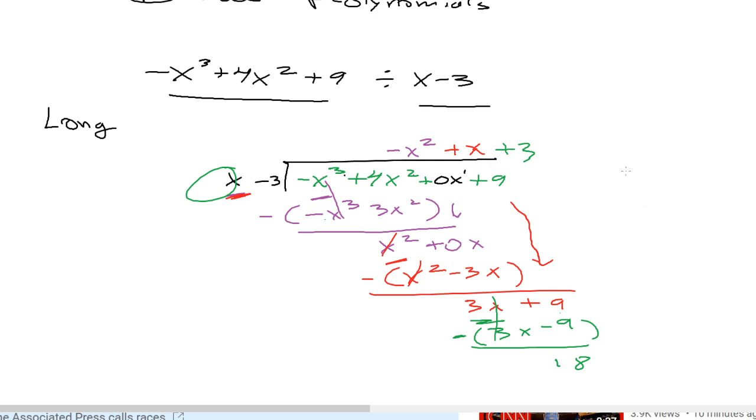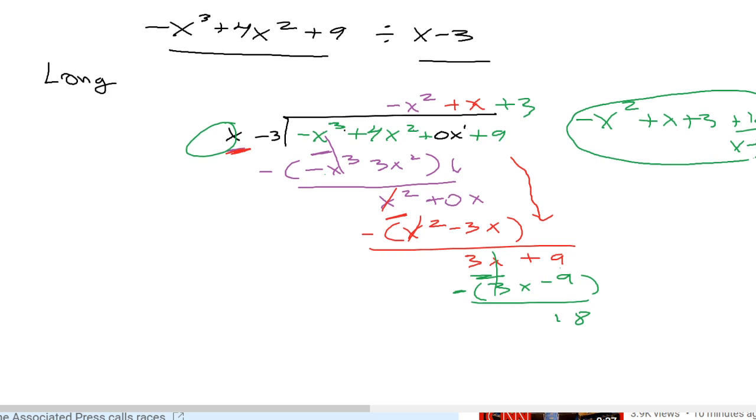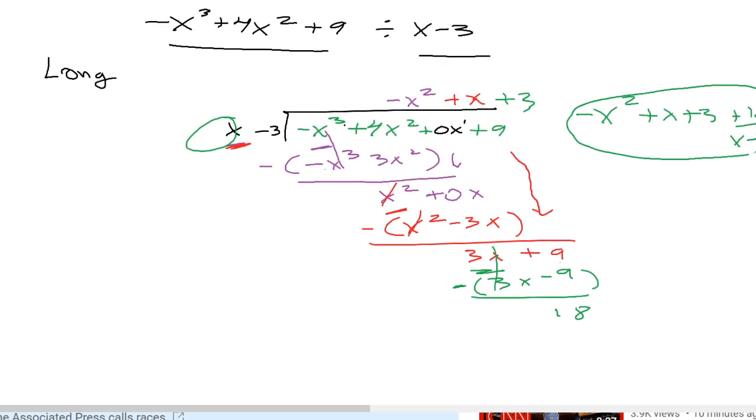And this goes away. So the final answer here is negative x squared plus x plus 3 plus 18 over x minus 3. So this is the final answer using the long way method.